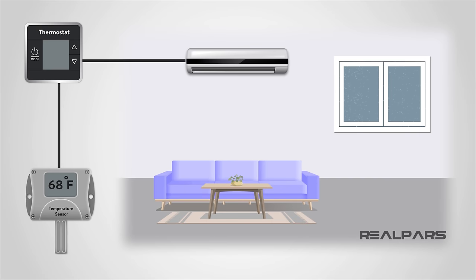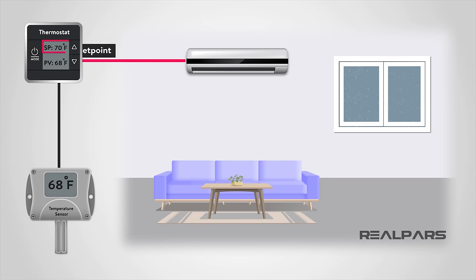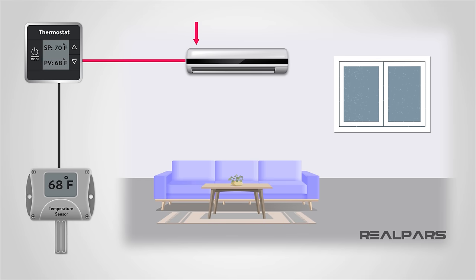A very simple example of a PID controller would be the regulation of a heating and air conditioning system in a home. Although there is a lot more to the controller than this example, this will give you a basic idea of the purpose of a device like this. Say you have the temperature in your home set to 70 degrees Fahrenheit. This setting would be called the set point, or SP for short. The current reading from the thermostat is 68 degrees. This term is the process variable, or PV.